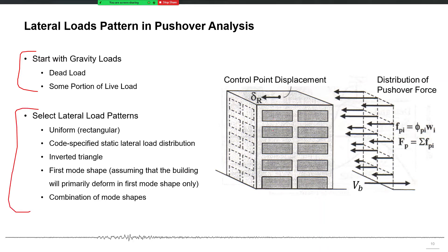Secondly, which type of load pattern should you use to push your building? There are several patterns available in literature. Previously, the uniform or rectangular pattern was used, and you can also use a code-specified static lateral load pattern, somehow similar to an inverted triangle. Inverted triangle means the maximum force is on top and you keep reducing it until it becomes zero at the bottom.